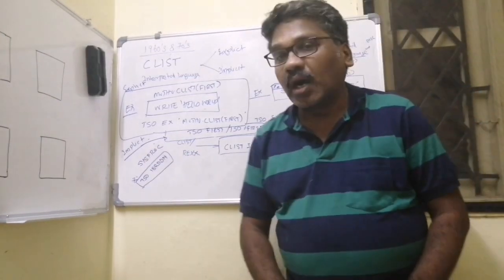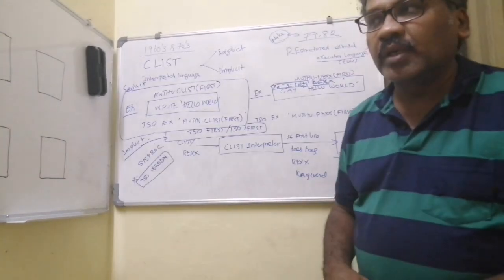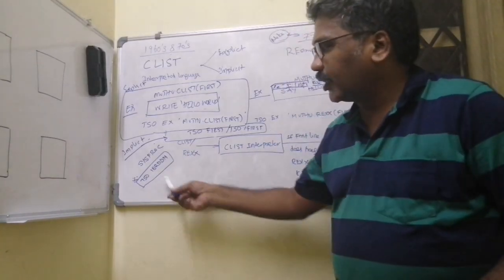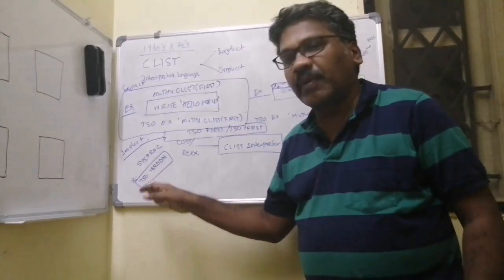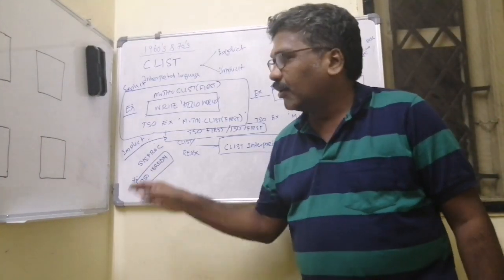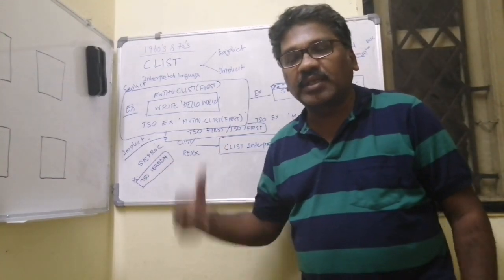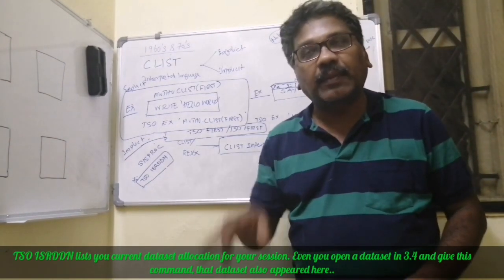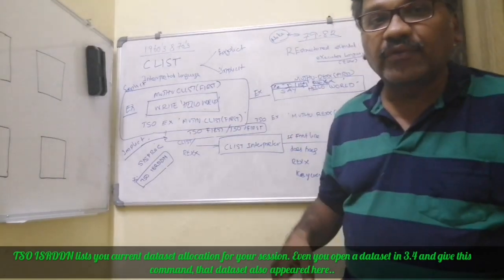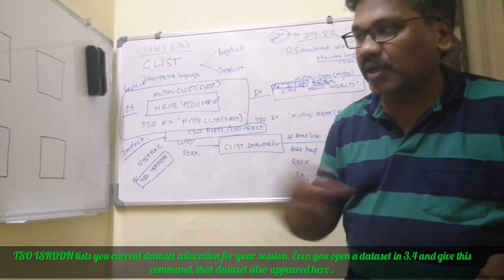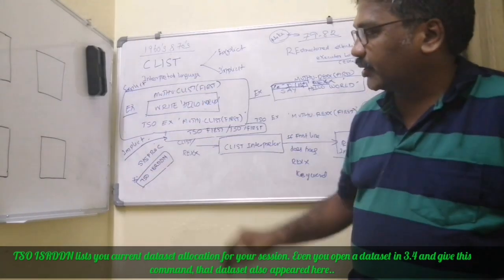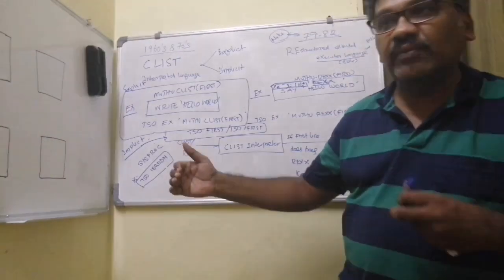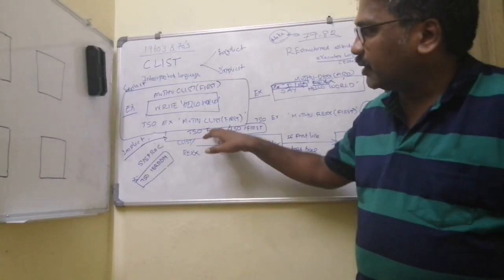To know what data sets are allocated against SYSPROC in your installation, give the command TSO ISRDDN. This is a very powerful and useful command. You'll get a panel output — at the top command line, type FIND SYSPROC. On the left-hand side you'll see SYSPROC, and on the right-hand side the list of data sets. If you keep your utility in any one of those data sets, you can implicitly execute it.